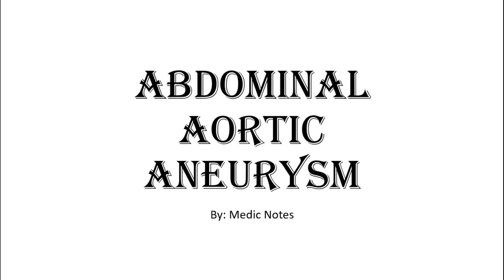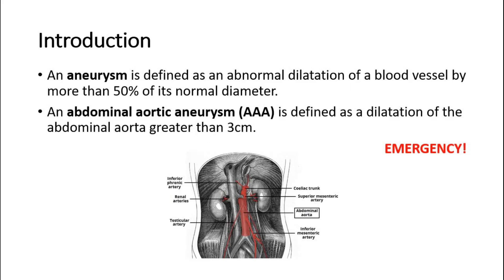Welcome back to another video of Medic Notes. This video is on abdominal aortic aneurysm. An aneurysm is defined as an abnormal dilatation of a blood vessel by more than 50% of its normal diameter. An abdominal aortic aneurysm is defined as a dilatation of the abdominal aorta greater than 3 centimeters.